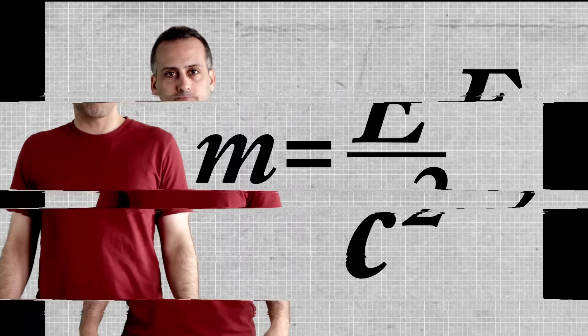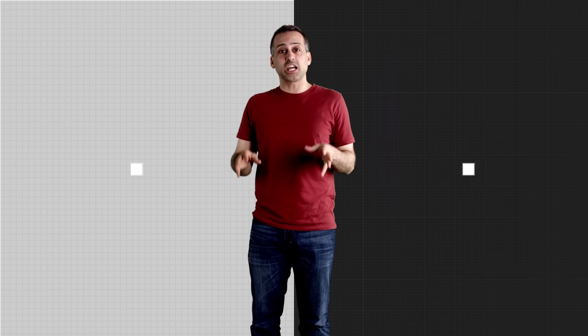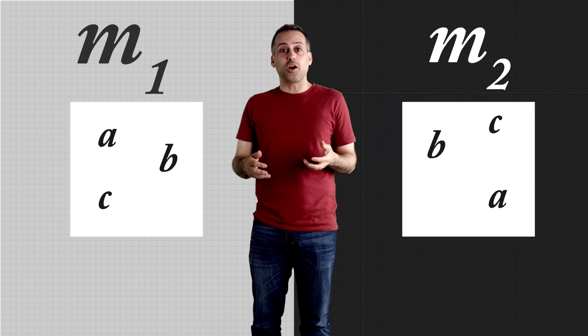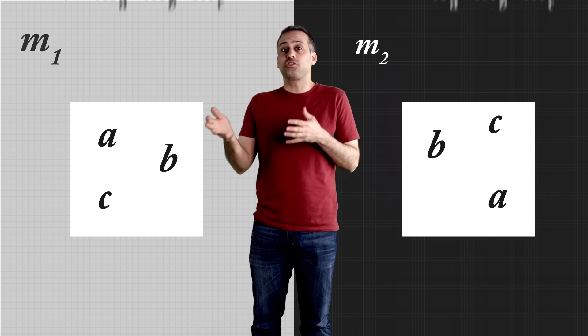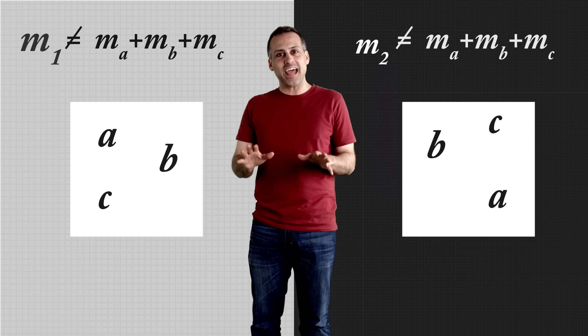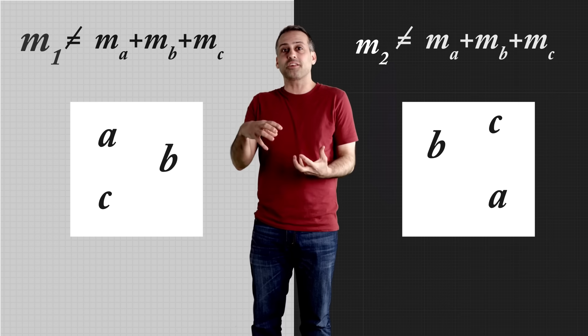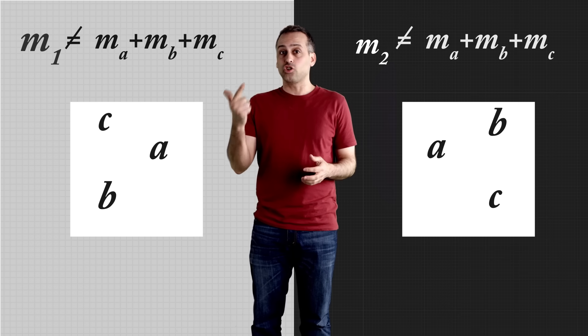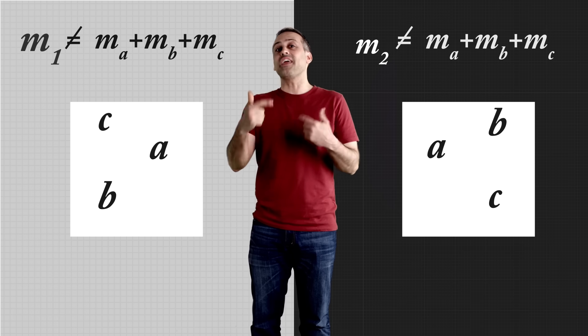Here's a pretty mind blowing one. Even if two objects are made up of identical constituents, those objects will not in general have equal masses. The mass of something that's made out of smaller parts is not just the sum of the masses of those parts. Instead, the total mass of the composite object also depends on one, how its parts are arranged, and two, how those parts move within the bigger object.